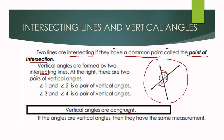Vertical angles are congruent. So if the angles are vertical, then they have the same measurements. For example, angle 1 measures 120 degrees, so angle 2 also measures 120 degrees. Angle 3 measures 45 degrees, therefore angle 4 also measures 45 degrees.